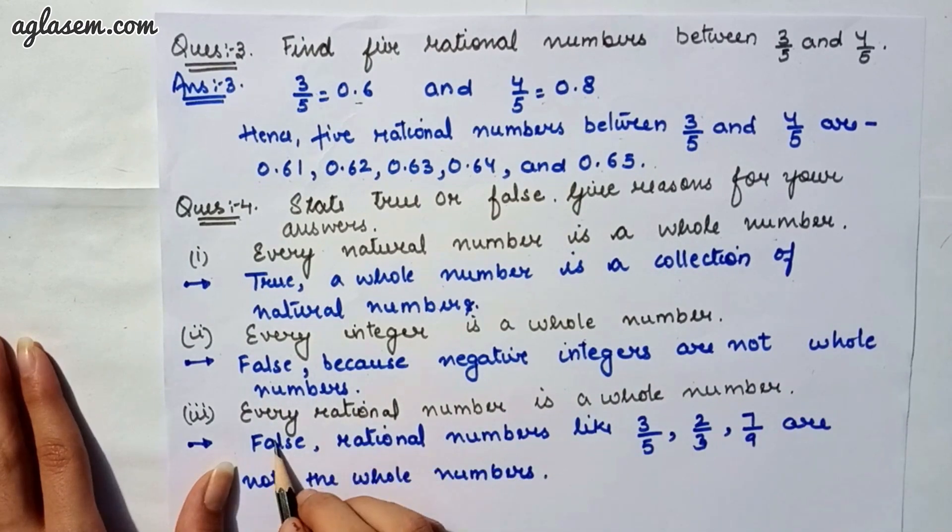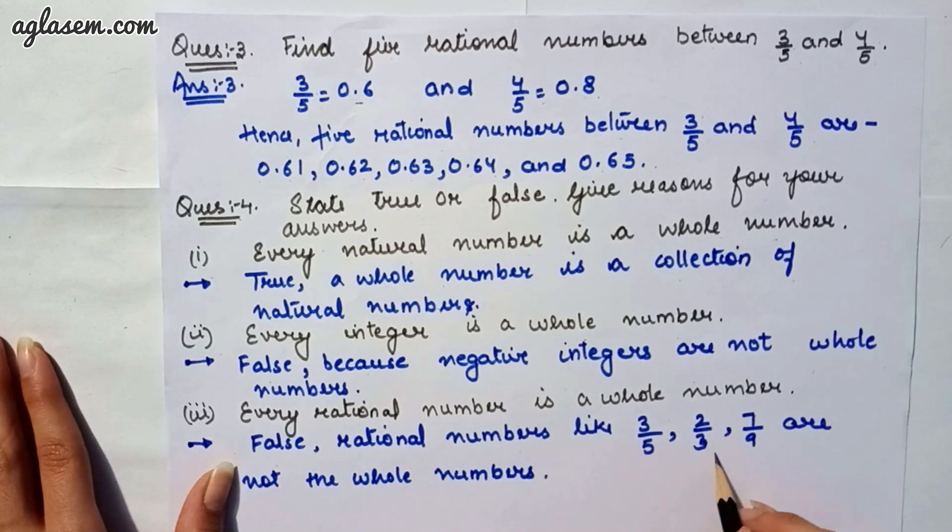Moving to our third part which says, every rational number is a whole number. That is also false because rational numbers like 3 upon 5, 2 upon 3 and 7 upon 9 are not whole numbers.